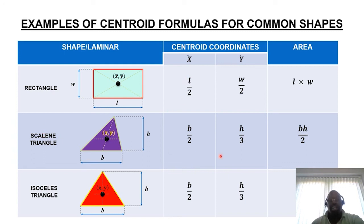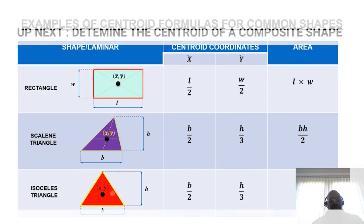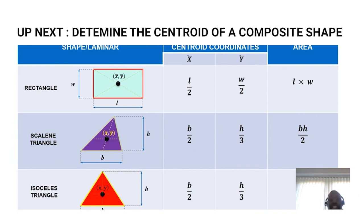You've got a scalene triangle. For this scalene triangle, the x-coordinate is the base divided by 2, and y is h divided by 3. We're assuming that the coordinate is here. You need to be very careful in terms of how you use these formulas. The area is half base times height. That's fairly straightforward. These are examples. Peruse and apply where appropriate.